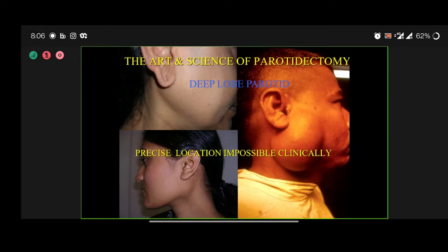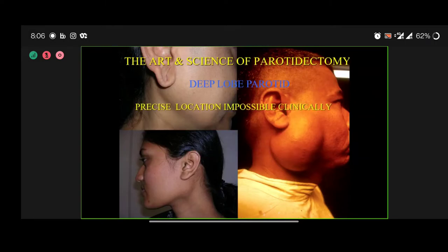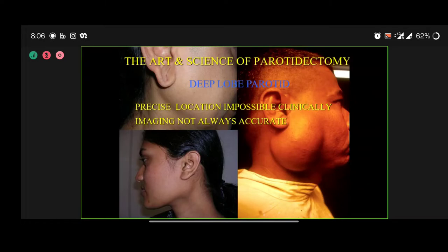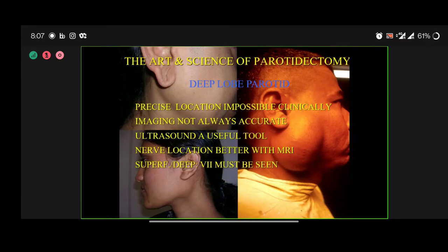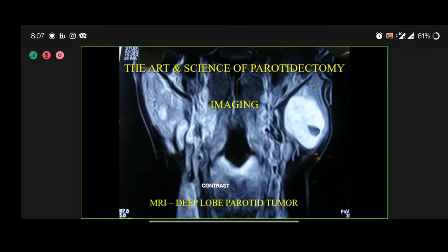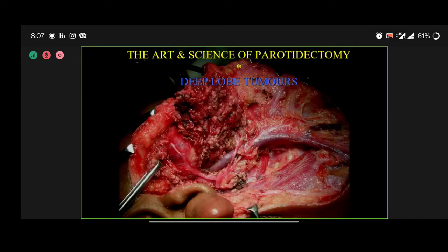For deep lobe parotid: precise location of the deep lobe is practically impossible clinically; imaging can be done but is not always accurate. Ultrasonography can be a useful tool; nerve location can be done better with MRI. Irrespective of the location of the tumor — whether superficial, deep, superior, inferior, medial, or lateral — we need to see the facial trunk. I would not focus on whether the tumor is deep or superficial, as long as there is no intraoral extension. Here is a case: this deep lobe tumor was handled in a proper manner.